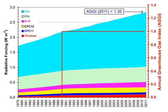Conversely, if a molecule has a longer atmospheric lifetime than CO2, its GWP will increase when a longer timescale is considered. Carbon dioxide is defined to have a GWP of 1 over all time periods. Methane has an atmospheric lifetime of 12 ±3 years. The 2007 IPCC report lists the GWP as 72 over a timescale of 20 years, 25 over 100 years, and 7.6 over 500 years.